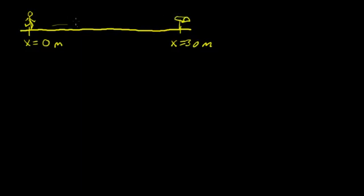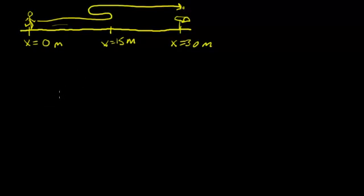And then what happens is the person walks, gets about halfway there. So here's the halfway point at x equals 15 meters. They walk in that direction, turn around about halfway, and then turn around again. And then they finally come to a stop at the mailbox. So there's a picture that shows what's going on.